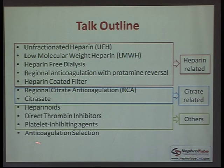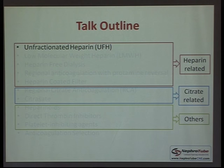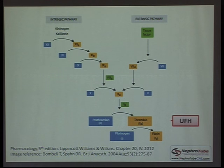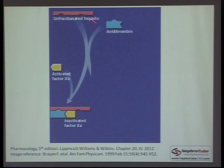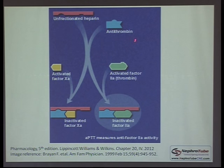Starting with heparin-related anticoagulation methods, the first and most commonly used is unfractionated heparin. Its site of action is by blocking the activity of both activated factor Xa and thrombin (factor IIa). Unfractionated heparin binds to antithrombin 3, and the antithrombin 3-heparin complex binds to activated factor Xa and inactivates it, disrupting the clotting pathway. Also, the complex attaches to thrombin (activated factor IIa) and inactivates it, so it inactivates both factor Xa and thrombin.